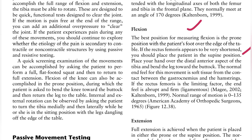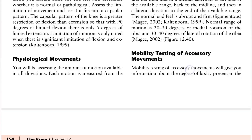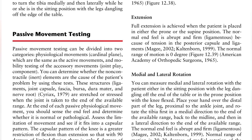If the rectus femoris is a limiting factor, then the end feel will be abrupt — a firm end feel — meaning the ligament end feel. The normal range of motion is 0 to 135 degrees. When we talk about extension, full extension will be achieved when the patient is in either prone or supine position. The normal end feel will be abrupt or firm, because of the posterior capsule or ligament. The normal range of motion for extension is 0 degrees.